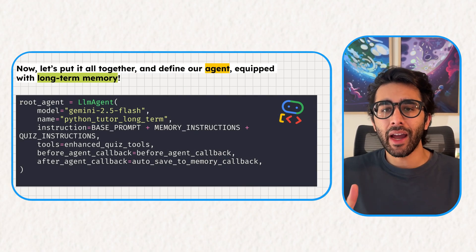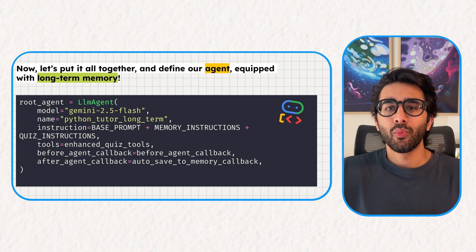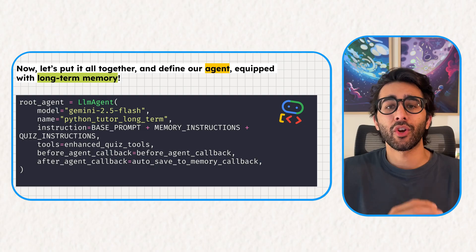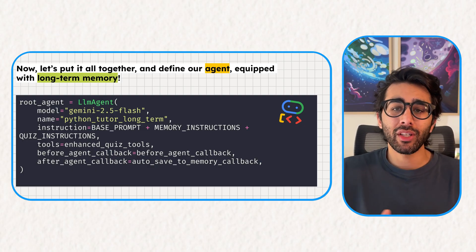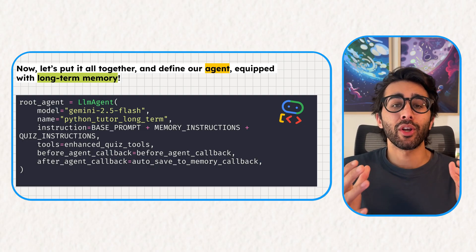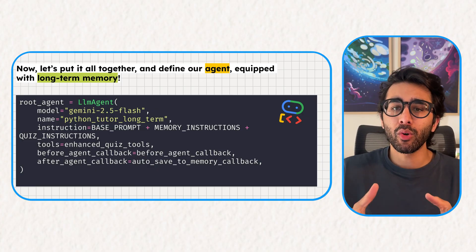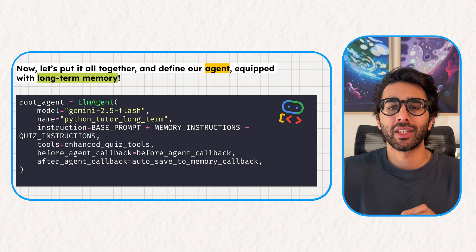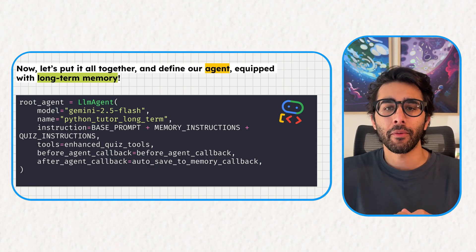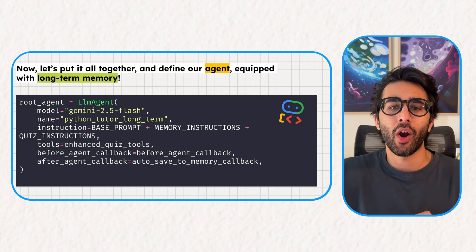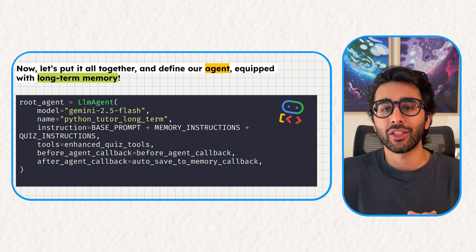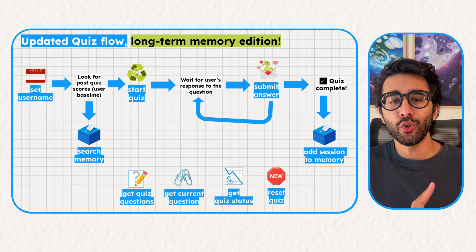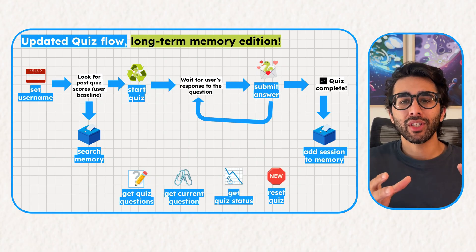When we pull it all together and define our final intelligent agent, we use the same LLM agent function from ADK but enhance it with our new memory components. We add our memory instructions to the prompt, include our new search_memory tool, and most importantly, we register our auto_save_to_memory callback function that allows memory bank to store the important information. This callback is the key to automating our memory — it'll run after each interaction to save the session's events.